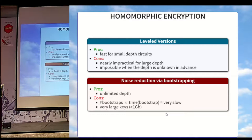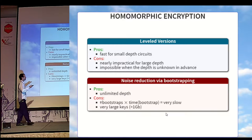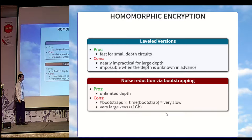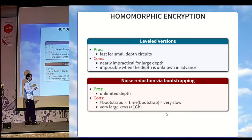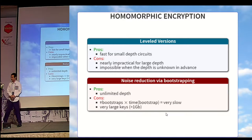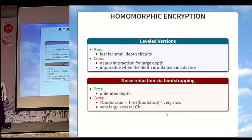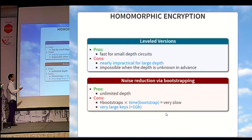The other possibility is to include a noise reduction technique, usually named bootstrapping. That will allow you to evaluate unlimited depth circuits, but you have to keep in mind that each bootstrapping takes time, and you will have to bootstrap a lot of ciphertexts all around your circuit. So overall, it is very slow and requires very large keys. In 2015, the minimum size was 1 gigabit. In this talk, we'll improve most of these counterparts.